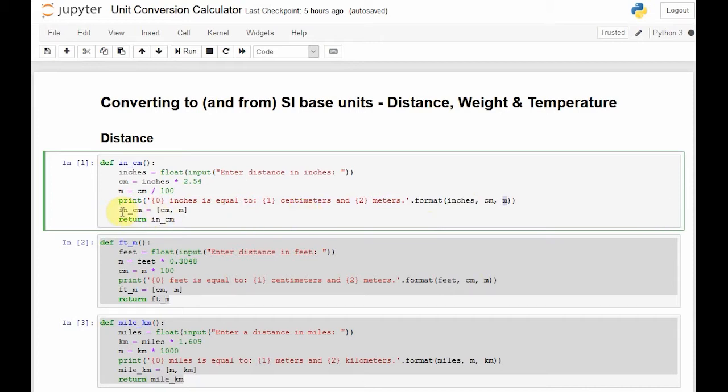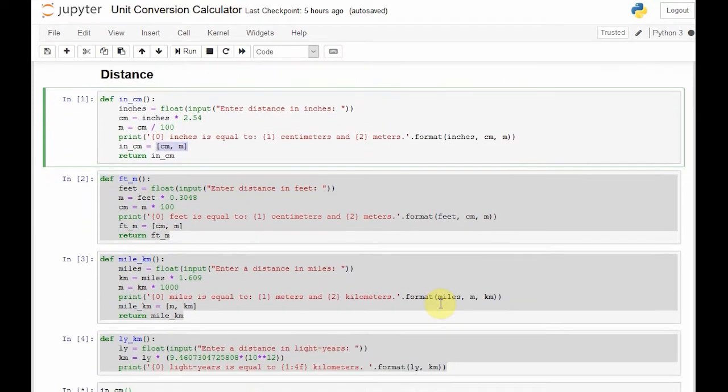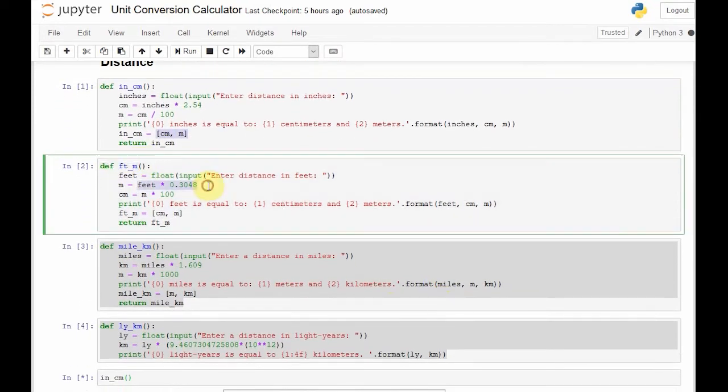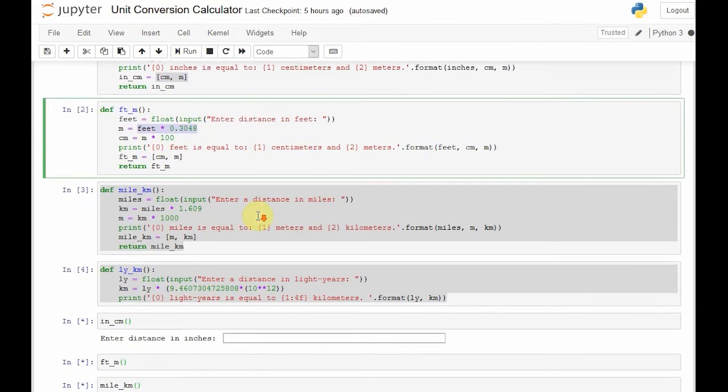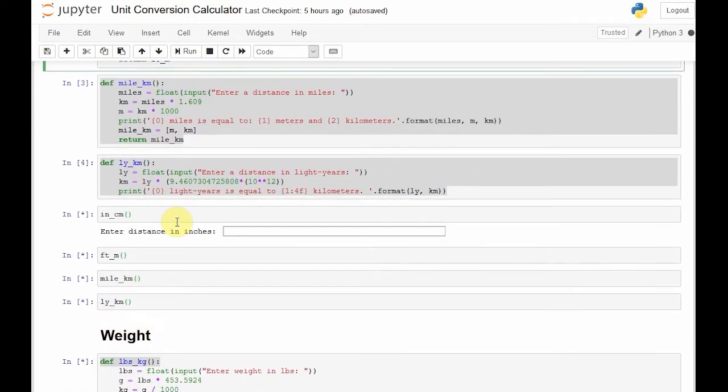And if we were, for instance, going to use these functions somewhere in another program and we need these values to just be returned and not only printed to the terminal, we can return the output of this function as a list containing both the centimeter and the meter value. We can do something similar with feet once we receive a feet input from the user. And again, return a list with centimeter and meters. We can do the same with miles to kilometers, even parsecs, nautical miles, yards, and light years. Why not?